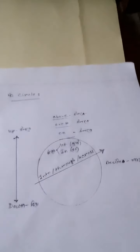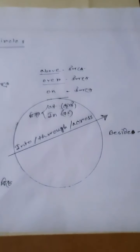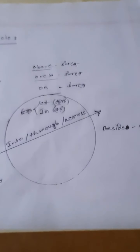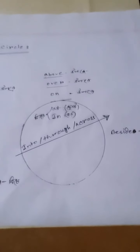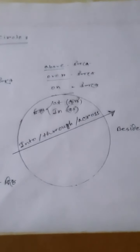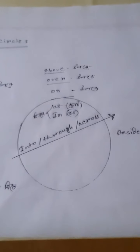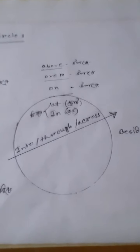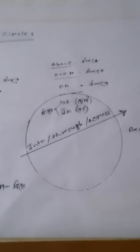It's very easy for you, dear students. Now I will show you a circle. Please look at the circle. Above, over, and on are outside of the circle. Inside of the circle, there are five prepositions: at, in, and also into, through, across.